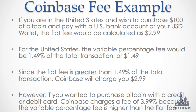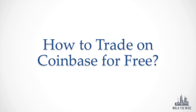Let's go straight into an example. Say you are in the United States and you want to buy $100 worth of Bitcoin with a US bank account or your USD wallet. The flat fee would be $2.99. The variable percentage fee would be $1.49 because you're using your USD wallet, you're in the United States, and you're buying Bitcoin. Since the flat fee is greater, Coinbase will charge you $2.99. However, if you were purchasing Bitcoin with a credit card or debit card, you would actually be charged the variable fee because that variable fee is higher than the flat fee.